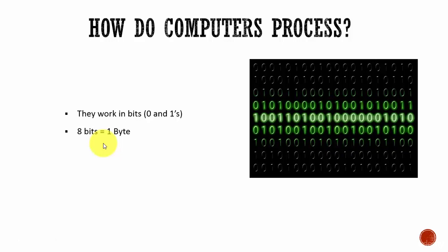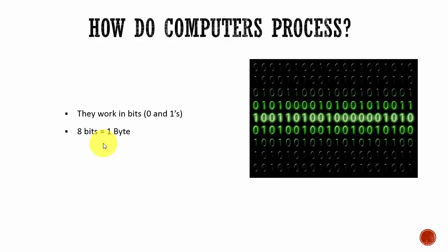Whenever we talk regarding computers, we know they process in the form of zeros and ones. In the same way, the Oracle database processes in the form of data blocks. Just like how 0 and 1 is the smallest unit for a computer, for a database, data block is the smallest unit of storage in an Oracle database.